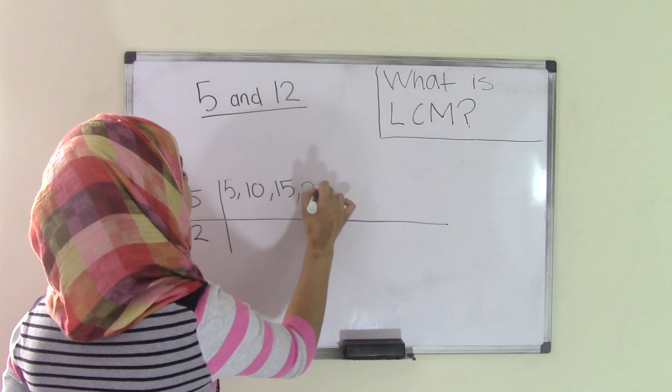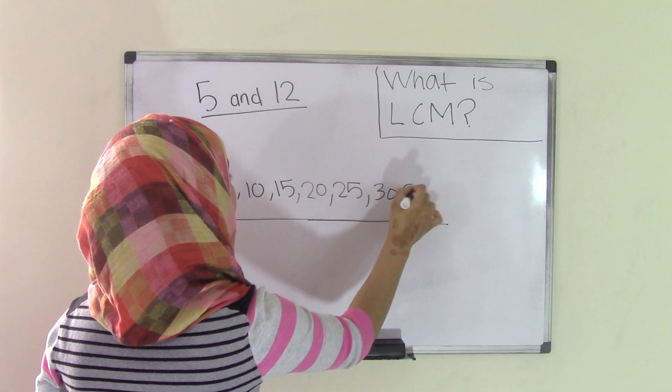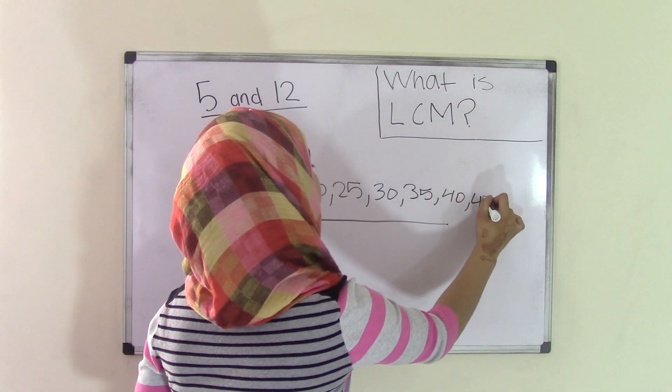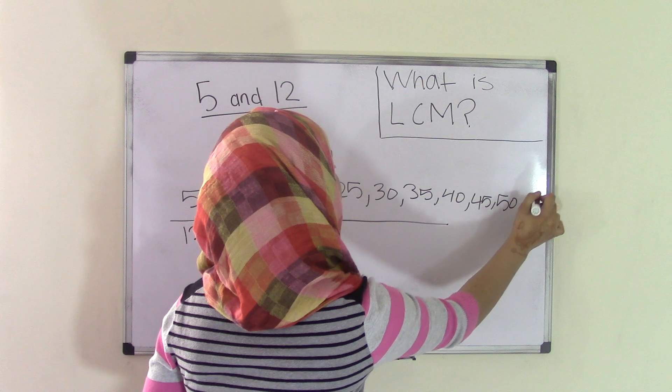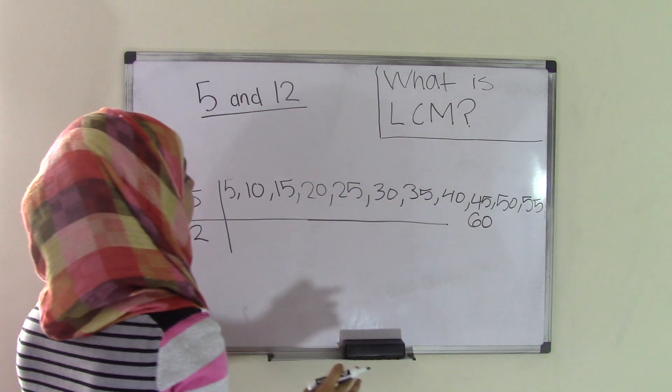That is going to be like a multiple of 5, right? So 5 times 3 is 15, then it will be 20, 25, 30, 35, 40, 45, 50, 55, and then I get 60, and I'm going to stop over here.